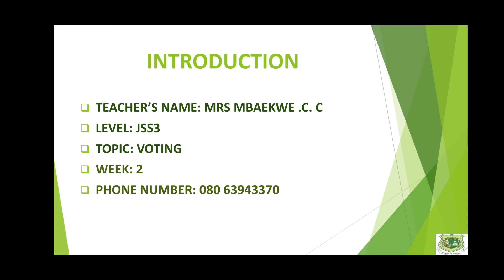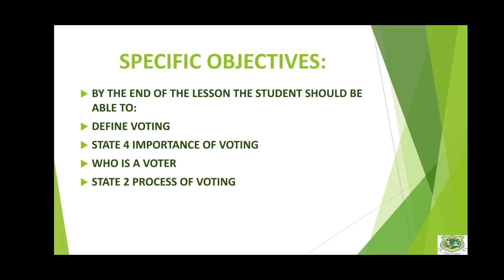My specific objective is, by the end of the lesson, the students should be able to: number one, define voting; number two, state the importance of voting; number three, who is a voter; and number four, state the process of voting.